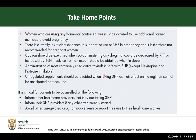In summarizing this session, take-home points are that women using any hormonal contraceptives must be advised to use additional barrier methods to avoid pregnancy. We do not have sufficient evidence to support the use of 3HP in pregnancy — it is therefore contraindicated. Caution should be exercised when co-administering any drug whose levels could be decreased or increased by INH. Always refer to a formulary; we can never know all drug-drug interactions, but if we refer, we might win.